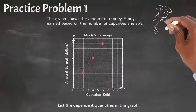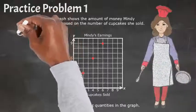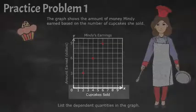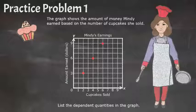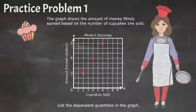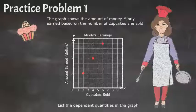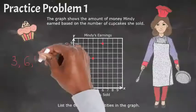Let's check out a practice problem. The graph shows the amount of money Mindy earned based on the number of cupcakes she sold. List the dependent quantities in the graph. Our two variables are the x-axis, cupcakes sold, and the y-axis, amount earned. The dependent quantity is always represented on the y-axis, as the amount earned would depend on the number of cakes sold. Therefore, our answer is the list of all the y-values on the points of our graph. So 3, 6, and 9. And that's it.